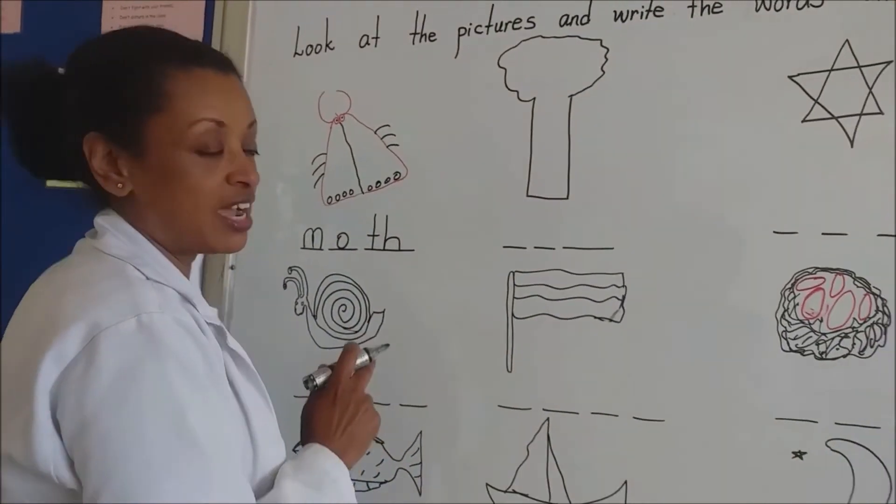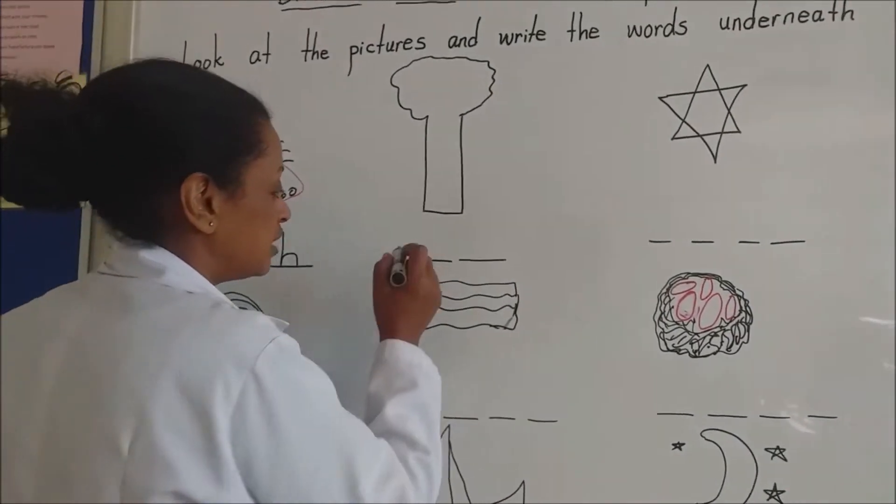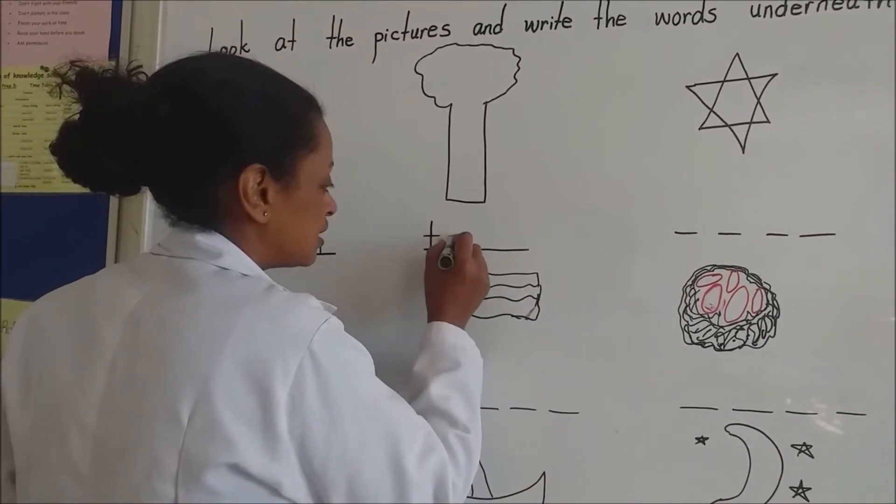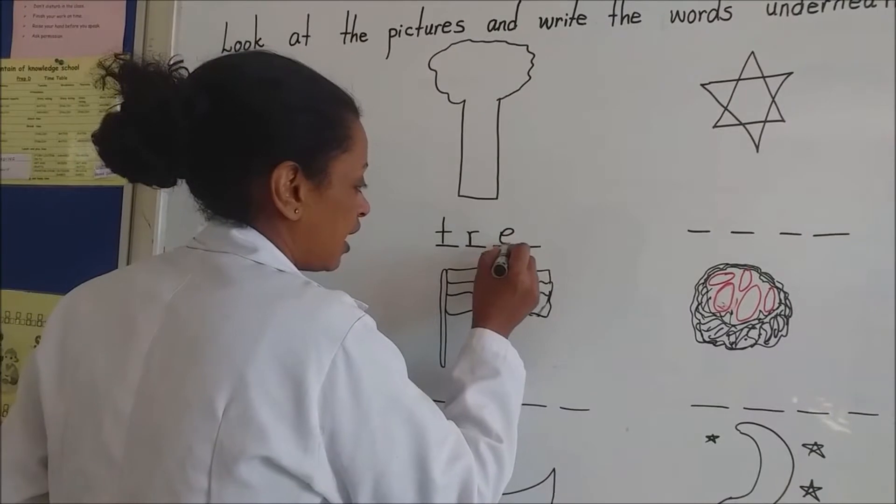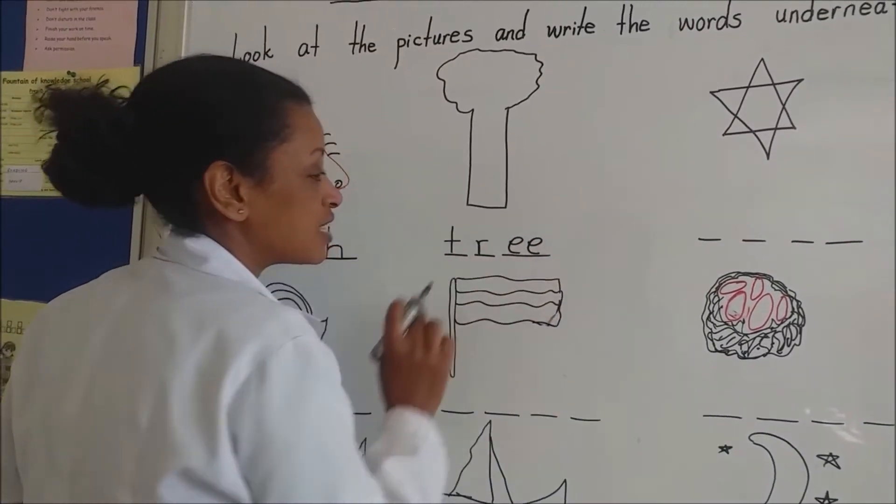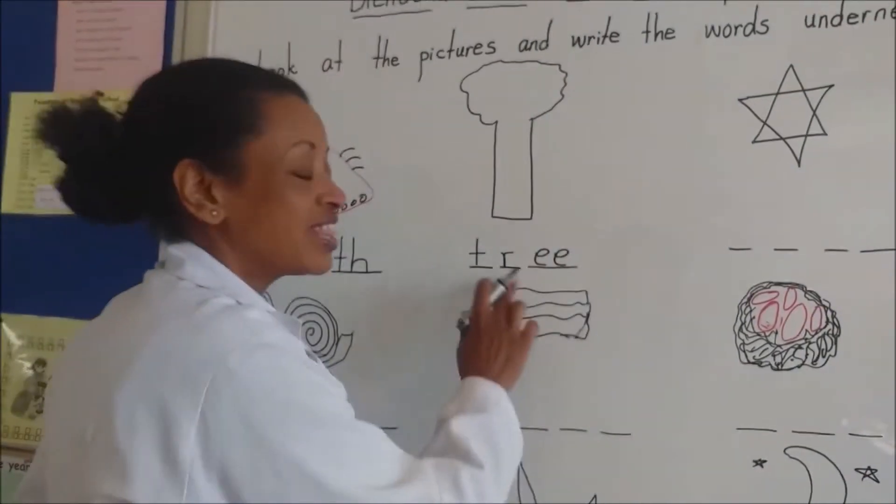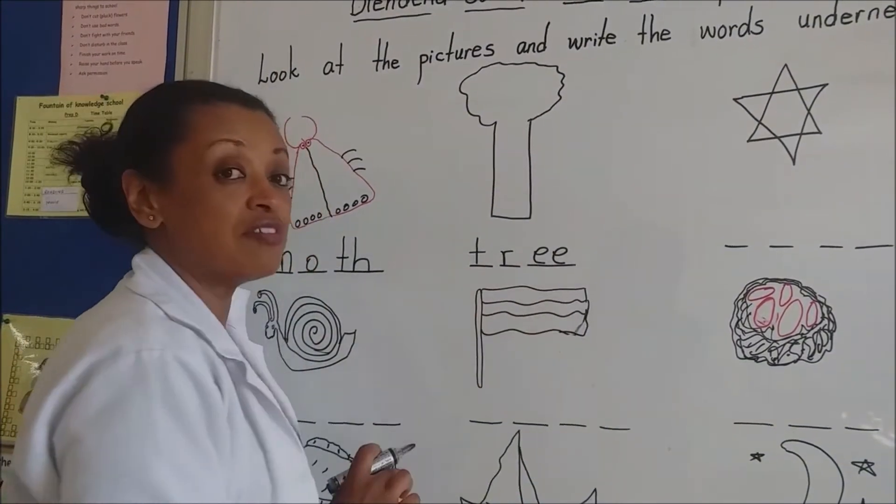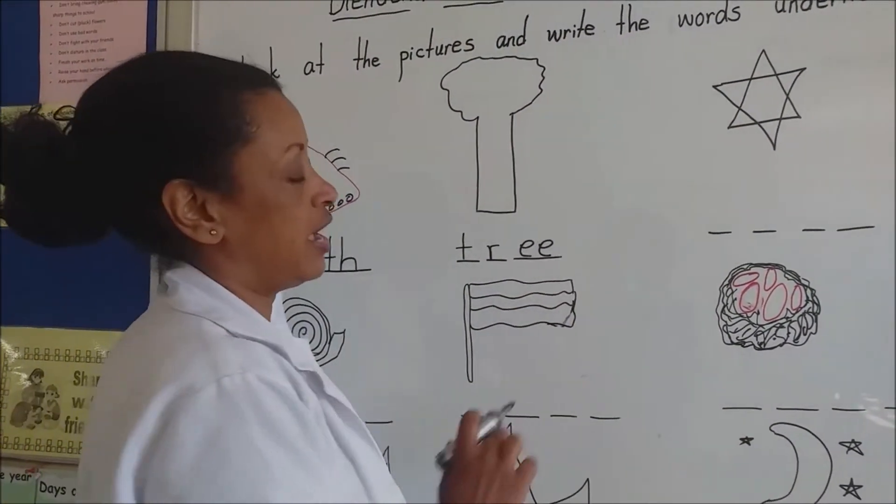This is a tree. A tree. How do we write tree? T, R, E, E. The two Es together make the E sound. Tree. This is a vowel pair. Excellent.